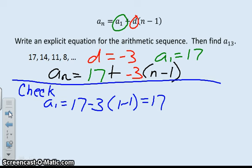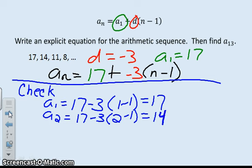And 17 is the first term. So, so far are my formulas working. Let's see if this works to calculate the second term. 17 minus 3 times 2 minus 1. 2 minus 1 is 1. 1 times negative 3 is negative 3. 17 plus negative 3 is 14. So look, that's the second term.